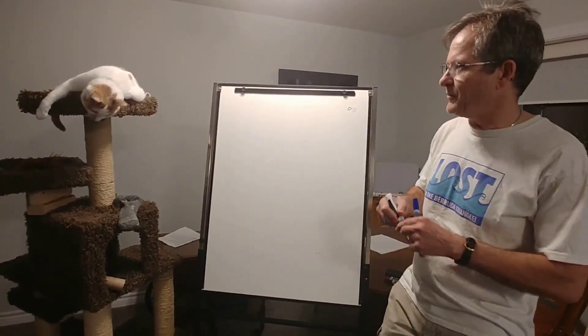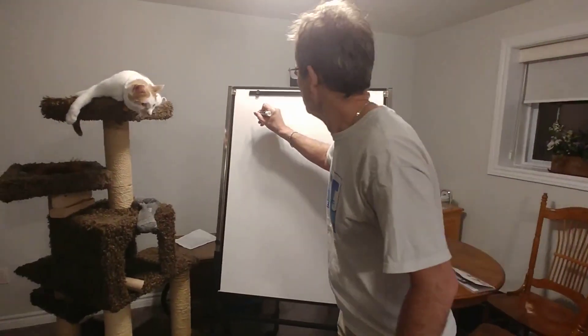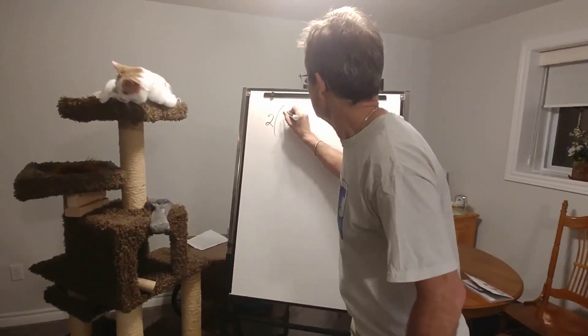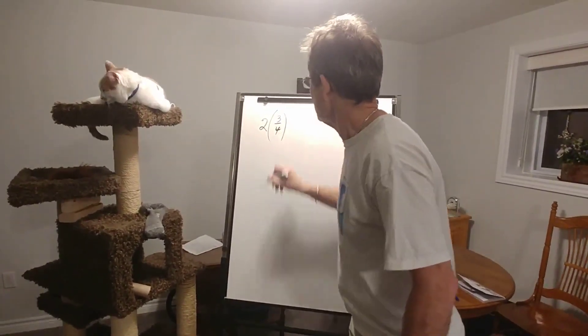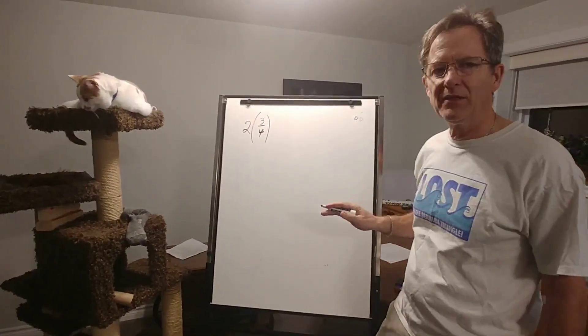So let's multiply a couple fractions. Let's say we have something very simple like two times three quarters. That does not mean two and three quarters.